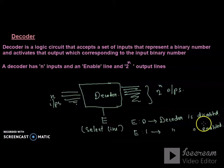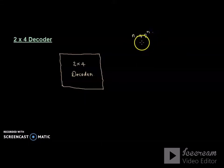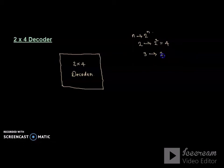Now let's take a look at the 2-by-4 decoder concept. If there are 3 inputs, the number of outputs will be 2-raised-to-3, which equals 8. If there are 4 inputs, the number of outputs will be 2-raised-to-4, which equals 16.